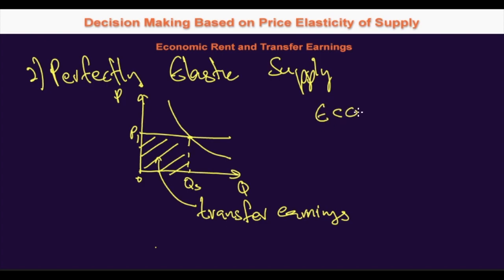In this case it fits perfectly, so the economic rent for perfectly elastic supply is actually zero. This is contrary to perfectly inelastic supply, where there is no need for transfer earnings to keep the land in use because it is given freely — so all the earning is a surplus and we call it economic rent.